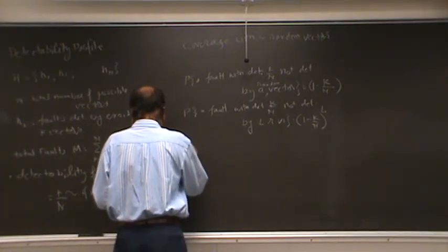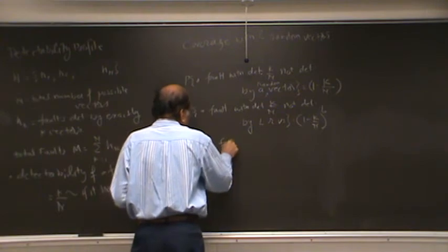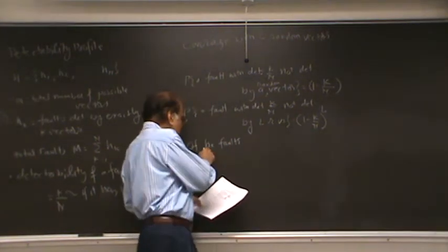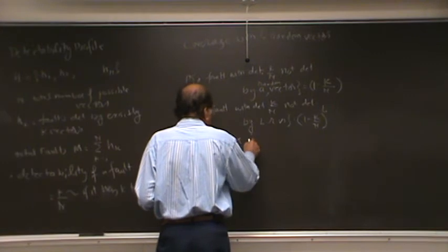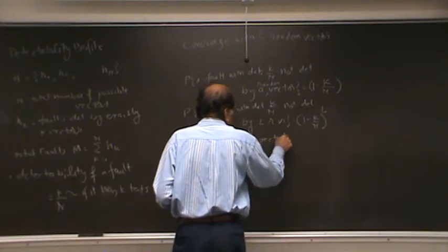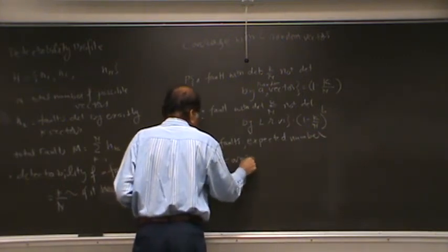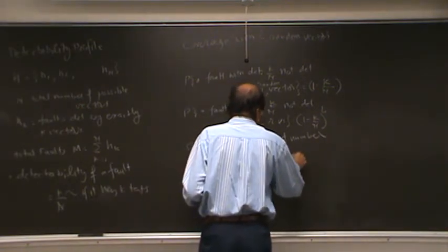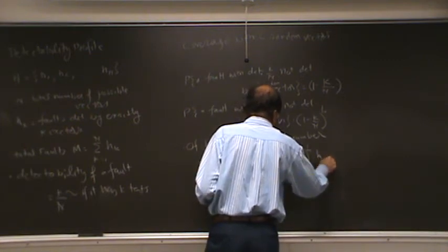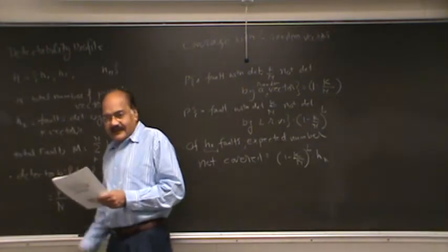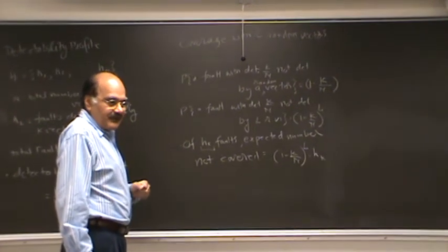Now here, consider this. Let us consider a partition with h sub k faults. Now in this partition, all these faults have the same detectability. Expected not covered is equal to 1 minus k by n, to l, multiplied by h sub k. So after h sub k number faults, the expected number that would not be covered after having applied l vectors would be this.